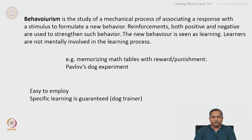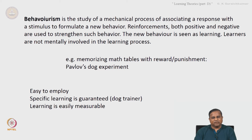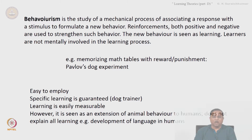Behaviorism is easy to employ. Specific learning is guaranteed, such as with a dog trainer. Learning is easily measurable — the response is measurable. However, it is seen as an extension of animal behavior to humans and does not explain all learning. For example, the development of language in humans is not explained by this theory.